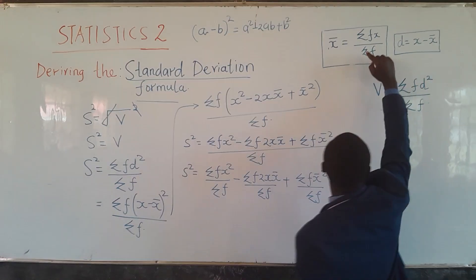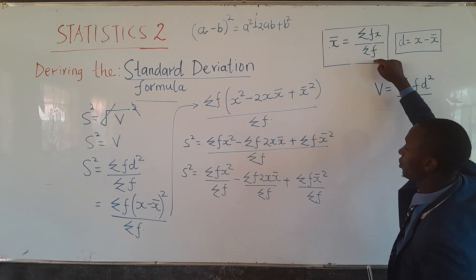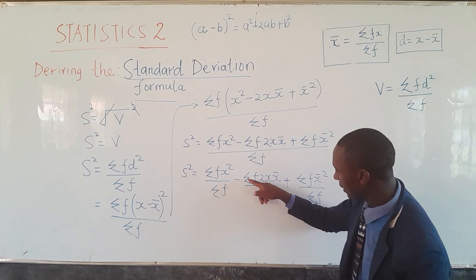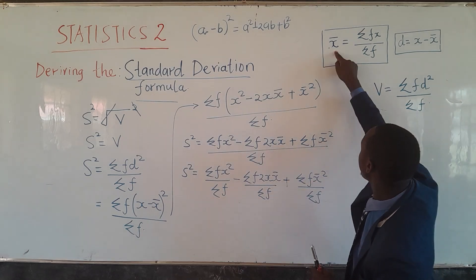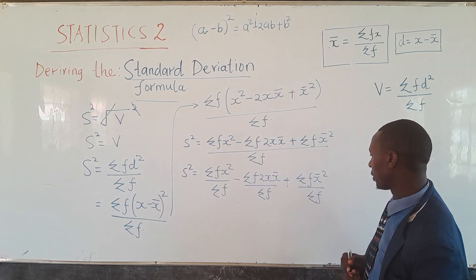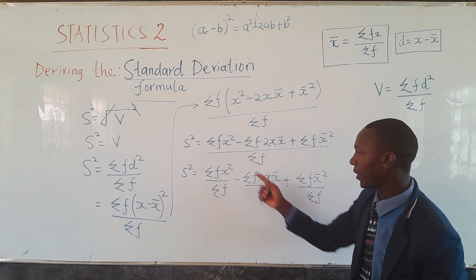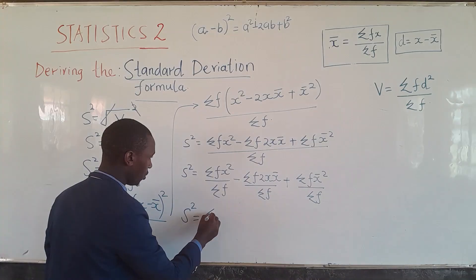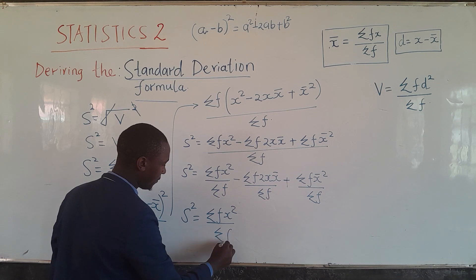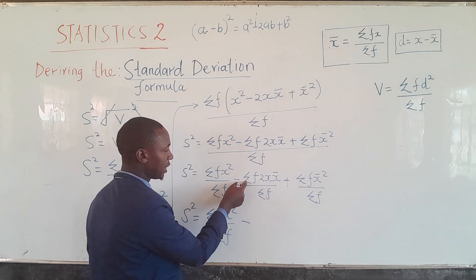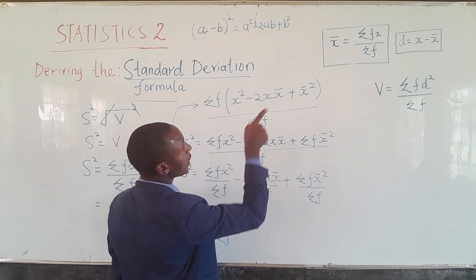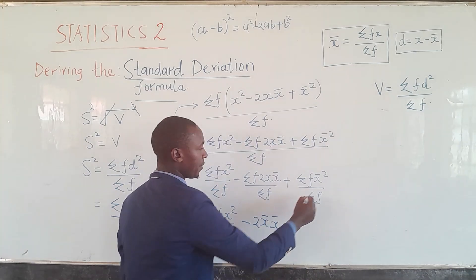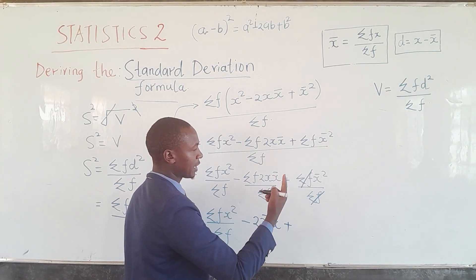We can now eliminate and simplify. Looking at the second term, summation of fx divided by summation of f equals x-bar, so we replace that to get 2x-bar. In the third term, summation of f and summation of f cancel out, leaving x-bar squared. So s² equals summation of fx²/Σf minus 2x-bar·x-bar plus x-bar².